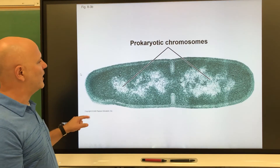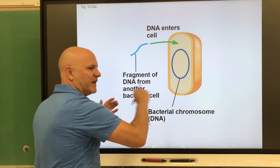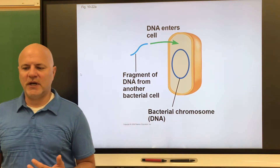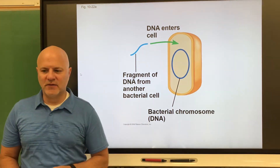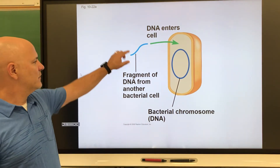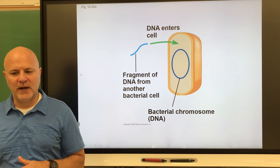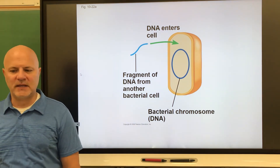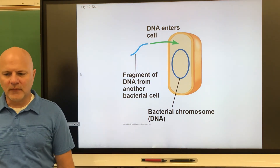Another type of reproduction is horizontal gene transfer — instead of moving vertically from parent to offspring, genetic information moves sideways from one organism to another, possibly unrelated organism. The first mechanism is called transformation, where an organism takes up naked DNA from the environment. A cell can incorporate that DNA into its own, though that's fairly rare. What typically happens is the bacterium breaks that DNA down and uses it for energy.